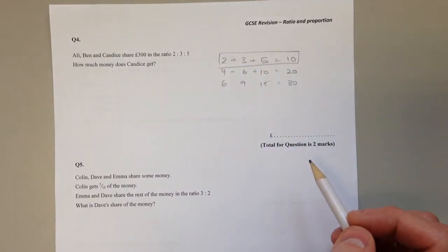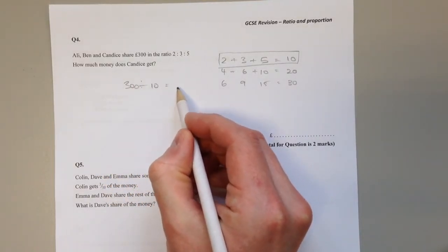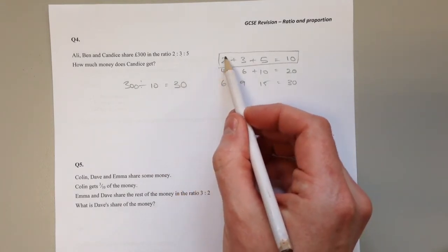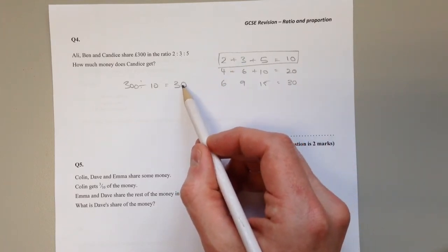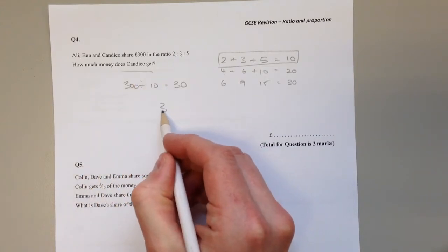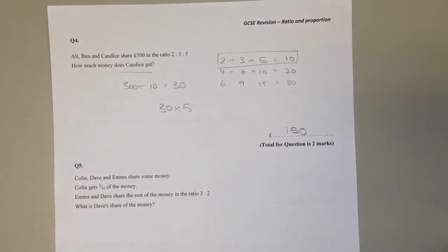This is how they share out 10 pounds. How many lots of 10 pounds are in 300 pounds? There's 30 lots. So Ali gets 30 lots of 2 pounds, Ben gets 30 lots of 3 pounds, and Candice gets 30 lots of 5 pounds. How much does Candice get? 30 lots of 5 pounds is 150 pounds.